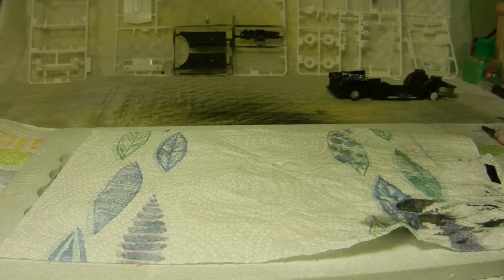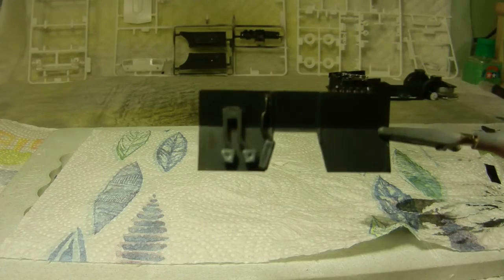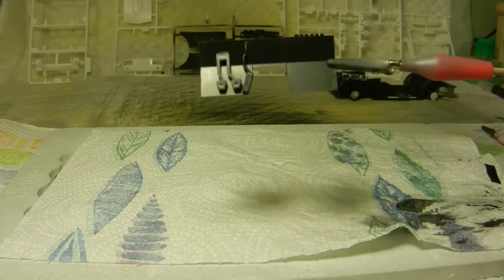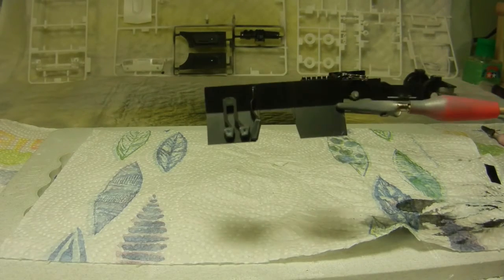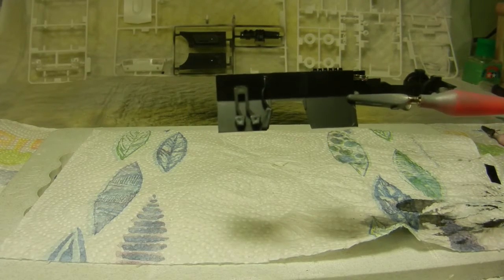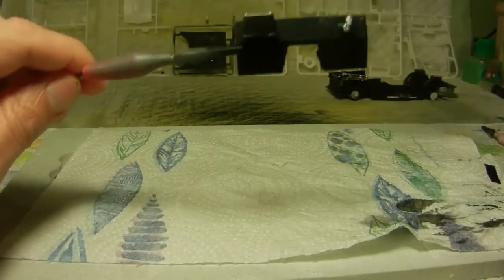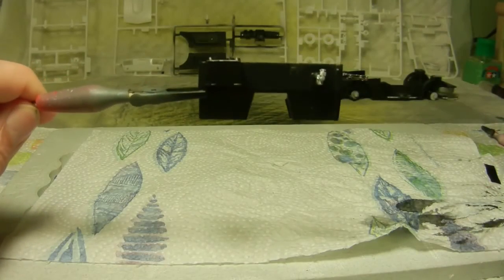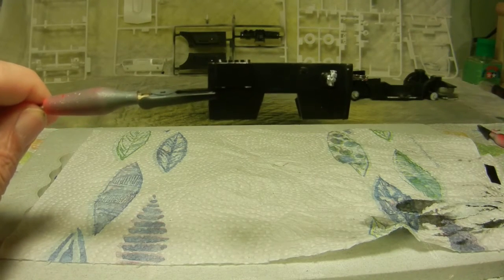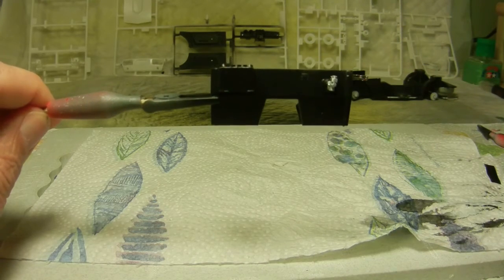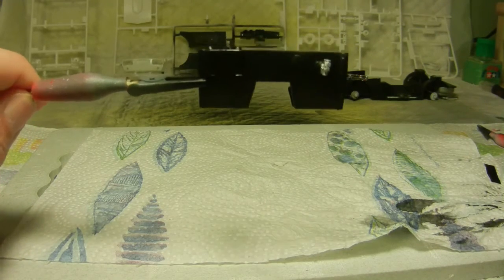Then we also went ahead and airbrushed on the satin black for the firewall, and I installed the pedals. On the back side facing the engine compartment is the battery which I actually hand brushed some gloss black on to kind of give a variation in tone. As far as the brake master cylinder we went ahead and painted that silver per the instructions.